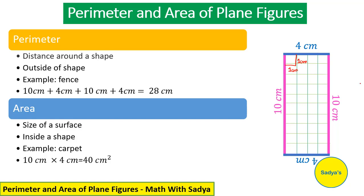There are two ways to do it. One way is to start counting the number of squares, and when you count, you will notice that there are 40 squares inside this shape. So area equals length times width, which gives us 40 cm squared.